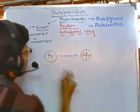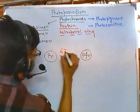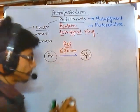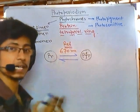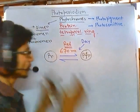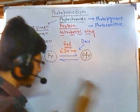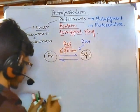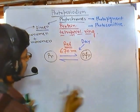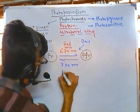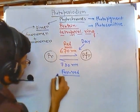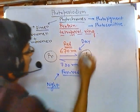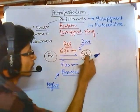When phytochrome is in PR form it receives red light at around 660–670 nanometers, and this converts it to the PFR structure. This happens during daytime. But at night, when it receives far-red light at around 730 nanometers, it shifts back to the PR form. So at daytime they are converted to PFR — phytochrome far-red — which is the active form. That's why 'F' is in the name: far-red.